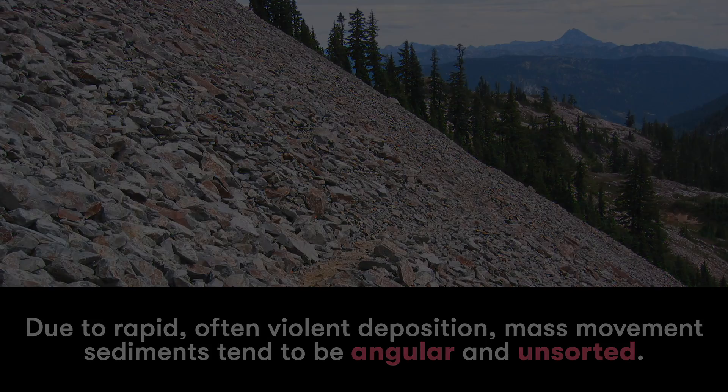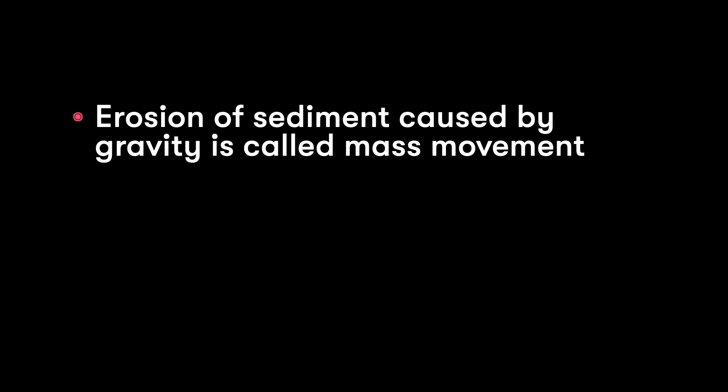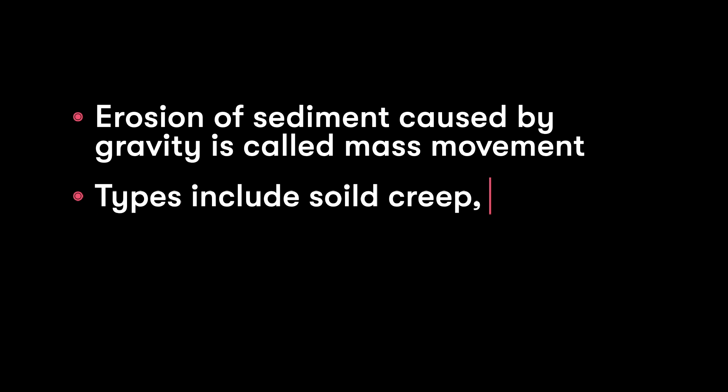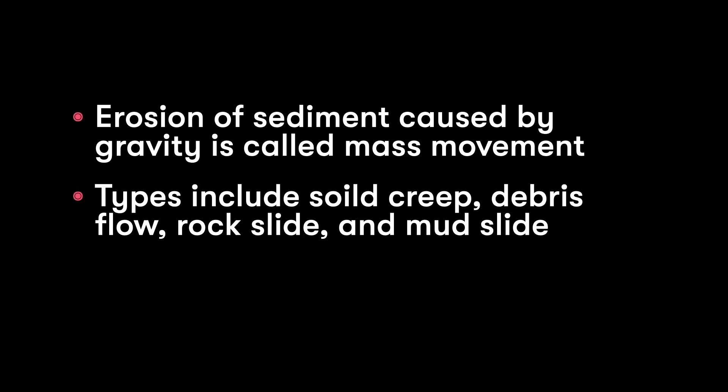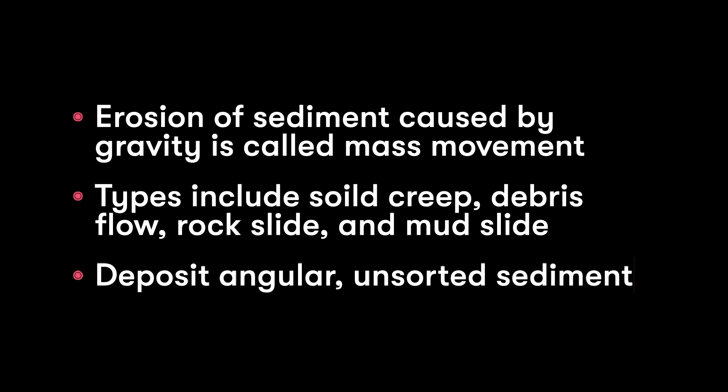To sum up: the erosion of sediment caused by gravity we call a mass movement. The different types include soil creep, debris flow, rock slide, and mudslide. And these deposit angular and unsorted sediment. That's our look at erosion and deposition caused by gravity. Be sure to check back for our next videos in which we'll take a look at glaciers, rivers, wind, and all the different types of erosion and deposition that take place. Thanks for watching.